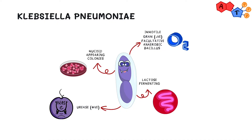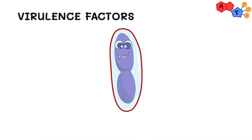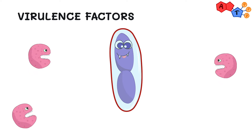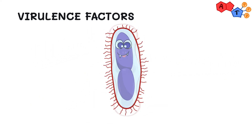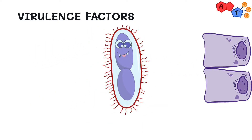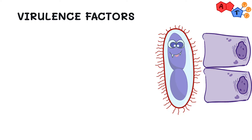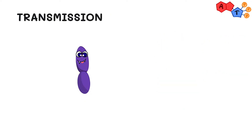Now let's talk about the unique virulence factors of Klebsiella. As mentioned, Klebsiella has a capsule that plays an important role in pathogenicity, as it protects the organism from being phagocytosed. It also has fimbriae that allow the bacterium to adhere to host cells.